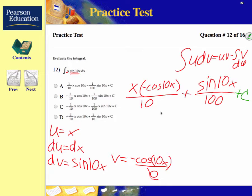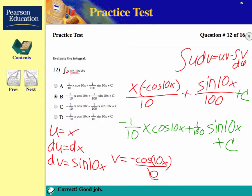So you have negative 1/10 from the negative cosine and dividing by 10, giving you negative 1/10 x cosine 10x, plus 1/100 sine 10x, plus c. And that should be your answer.